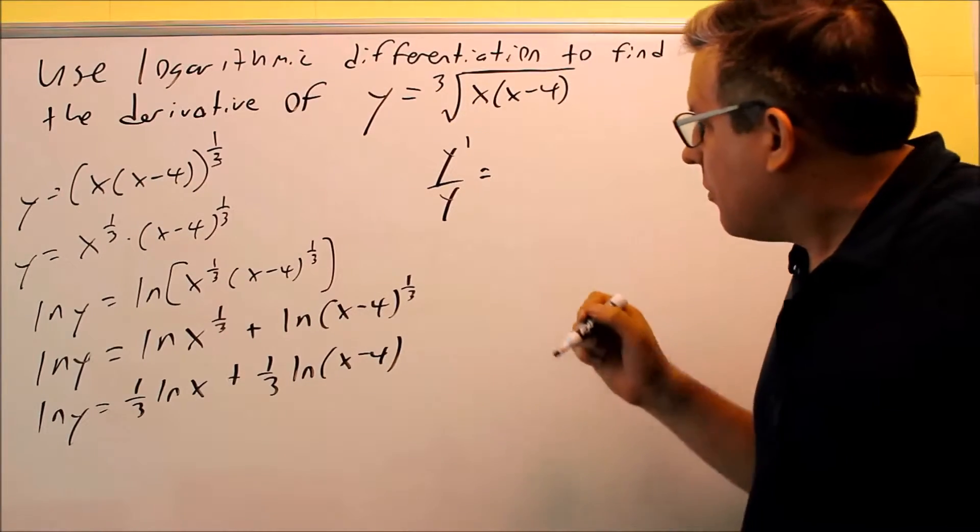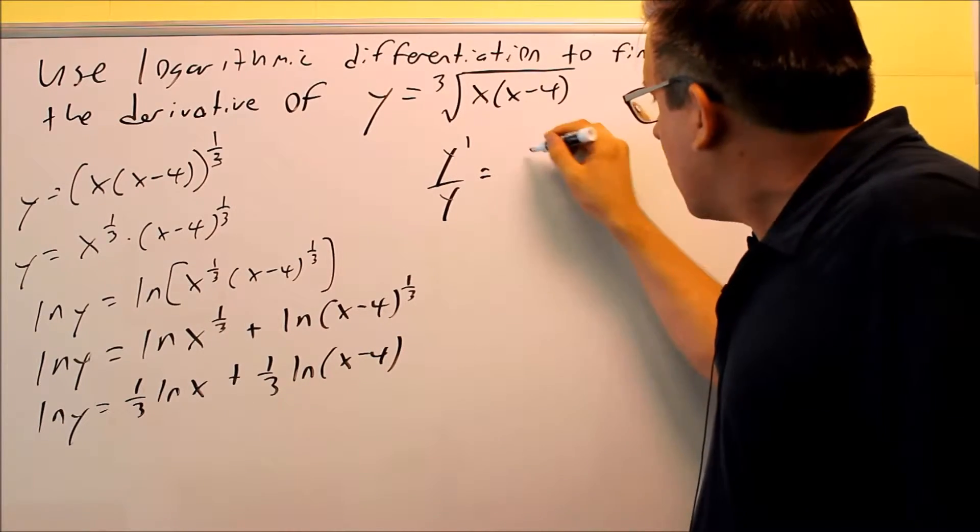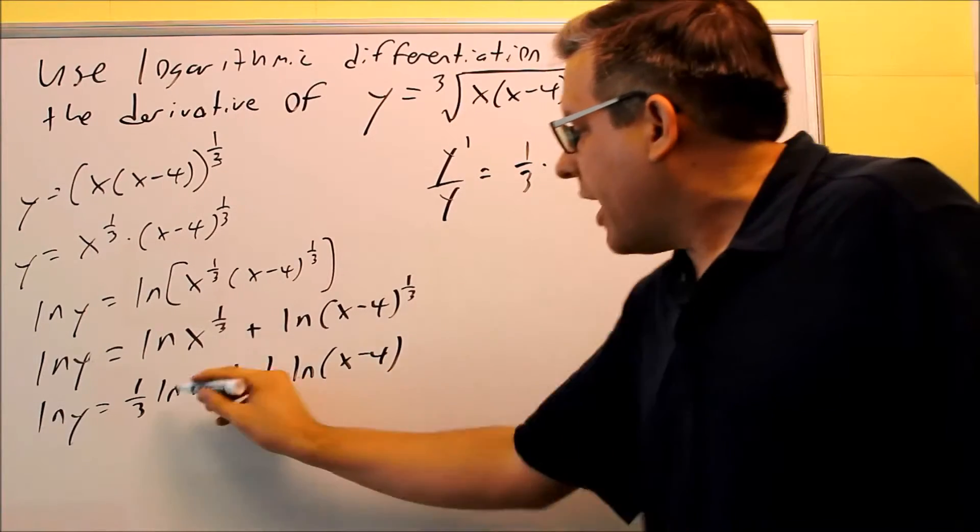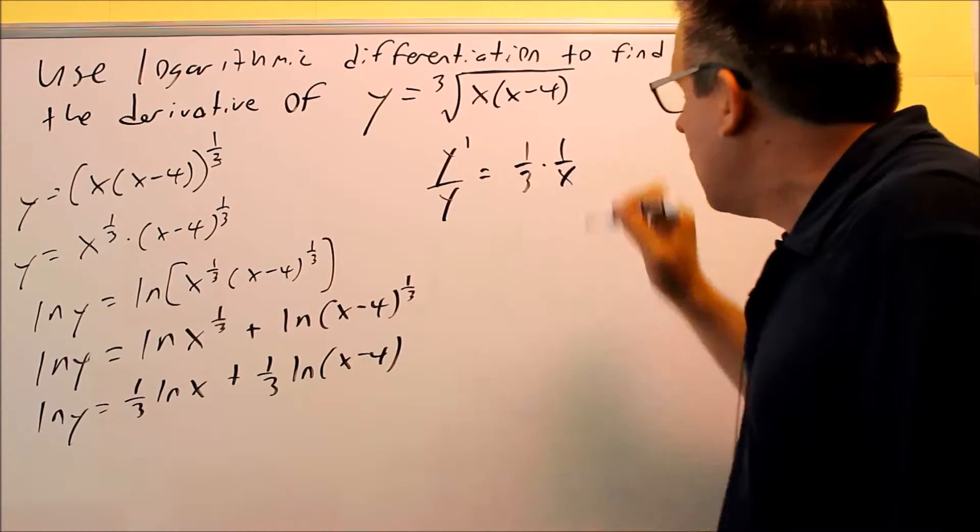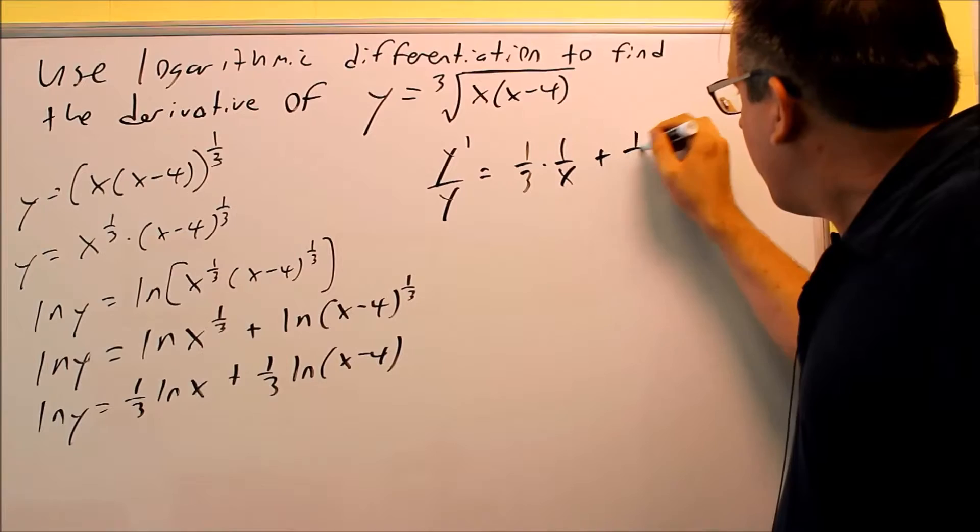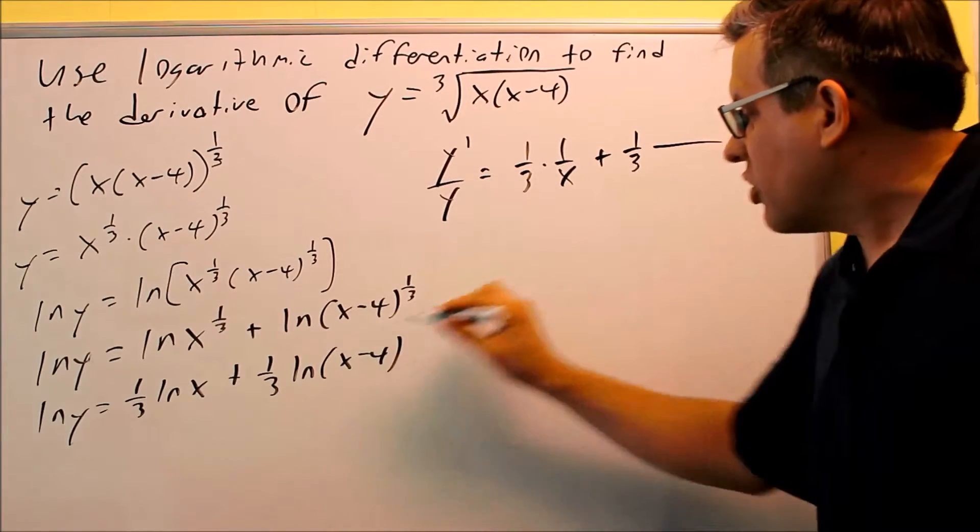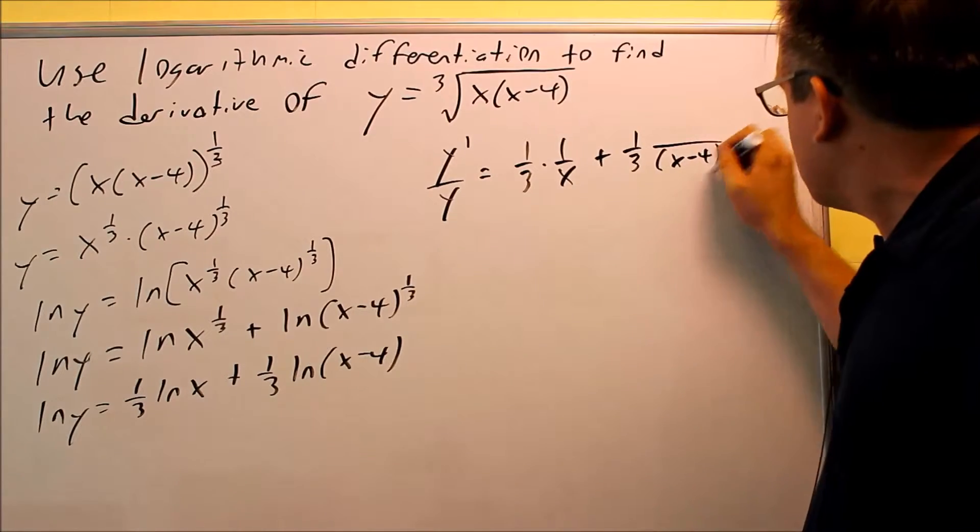Let's do the derivative of this part. For this one I have a 1/3 times ln x, which is just going to be 1 over x. That's the derivative. This next one over here I have a 1/3, and then for this one, this goes in the bottom, x - 4, and on top the derivative of x - 4 is just going to be a 1.